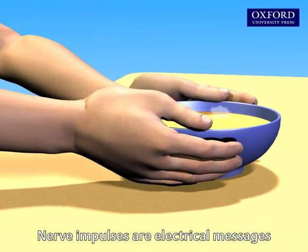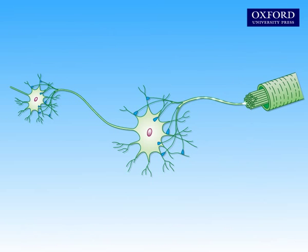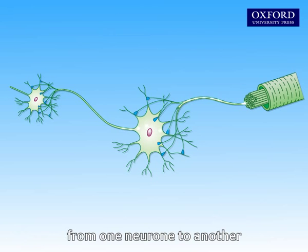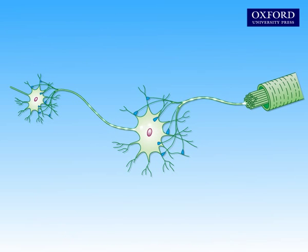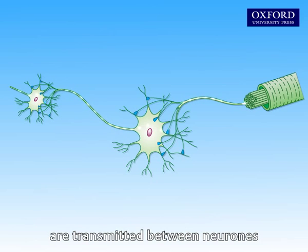Nerve impulses are electrical messages transmitted along nerve fibres at high speed. However, nerve impulses cannot travel directly from one neuron to another. Let's see how nerve impulses are transmitted between neurons.